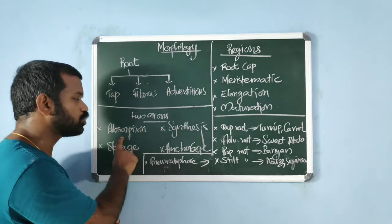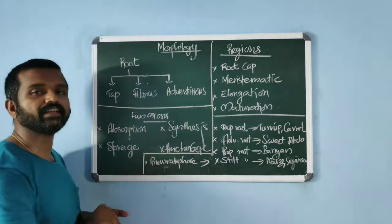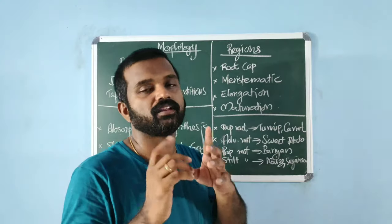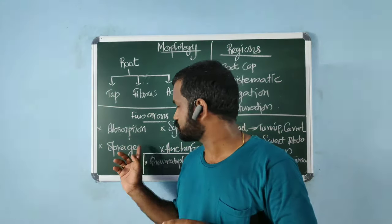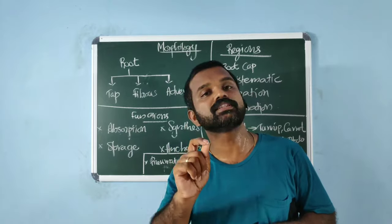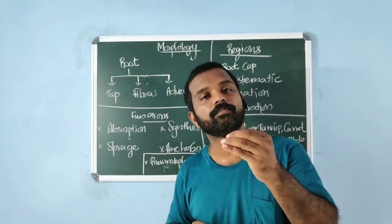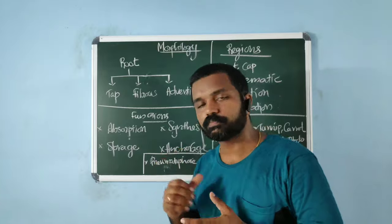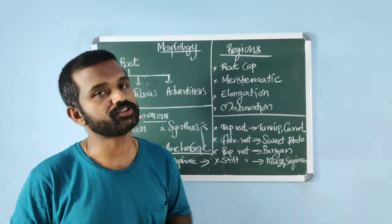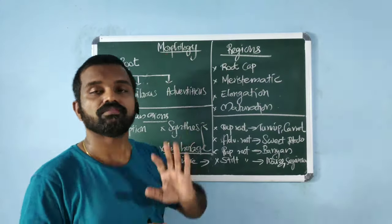Functions of the root system include absorption, synthesis, storage, and anchorage. Absorption refers to the uptake of water and minerals. Synthesis refers to the production of plant growth regulators (PGR). Storage involves storing food materials, and anchorage provides support to the whole plant.